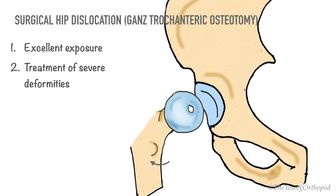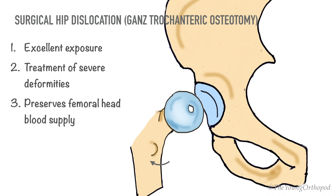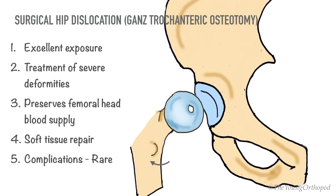The procedure permits treatment of severe deformities, preserves femoral head blood supply, and allows repair of soft tissues such as labral and chondral tears. Complications are rare but include trochanteric nonunion and heterotopic bone formation. Anterior Z-capsulotomy preserves posterior vessels to the femoral neck and minimizes the risk of osteonecrosis.